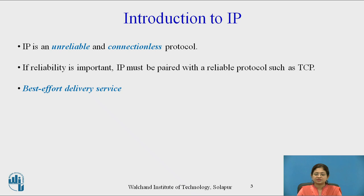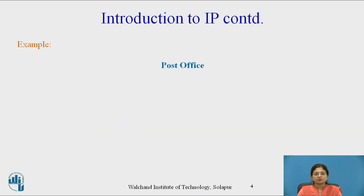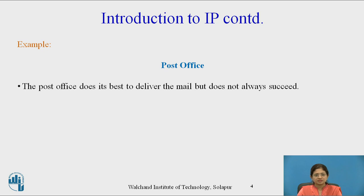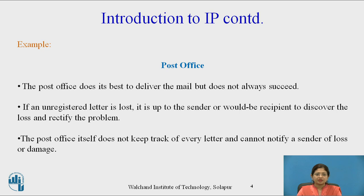In transmission, IP packets can be corrupted, lost, arrived out of order, or delayed, and may create congestion for the network. But still IP provides, to some extent, the best effort delivery service. The example of best effort delivery service is the post office. The post office does its best to deliver the mail but does not always succeed. If an unregistered letter is lost, it is up to the sender or recipient to discover the loss and rectify the problem. The post office itself does not keep track of every letter and cannot notify a sender of loss or damage.